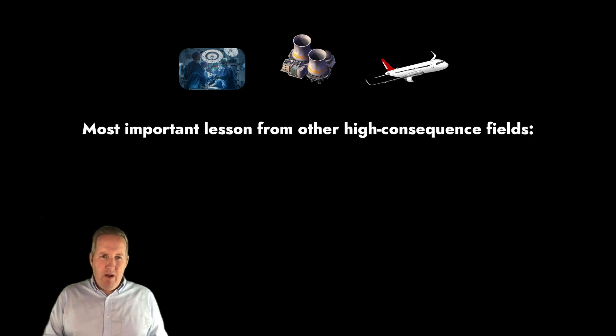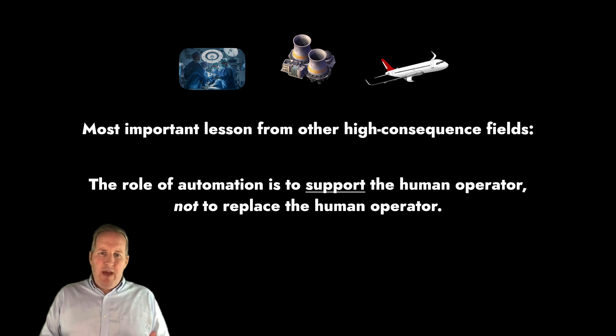I think the most important lesson we've learned from other high-consequence fields—medical operating rooms, nuclear power plants, air traffic control, areas where they've spent billions of dollars and thousands of person-years trying to reduce risk and get humans out of the loop—what have they learned? They've all learned that the role of automation is best when it supports the human operator, not when it's trying to replace the human operator. When we're trying to replace the human operator, we have more problems. Human beings have to try to solve the problem fighting the automation. The best designed automation that actually lowers risk and causes better outcomes is when the automation is built to support the human operator.